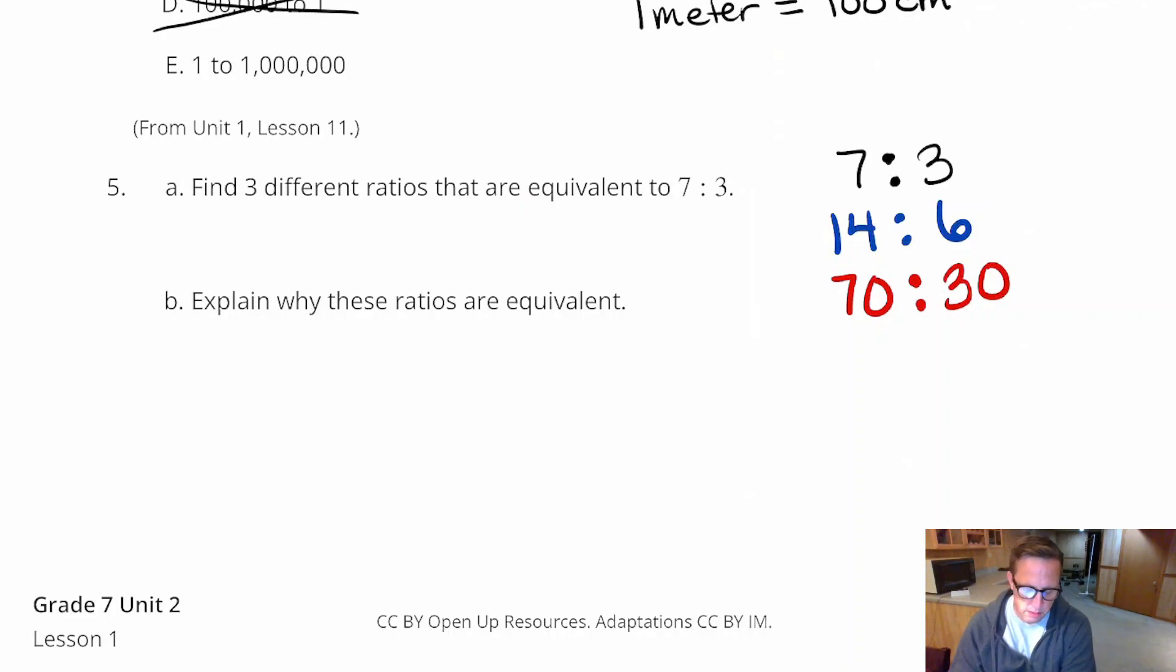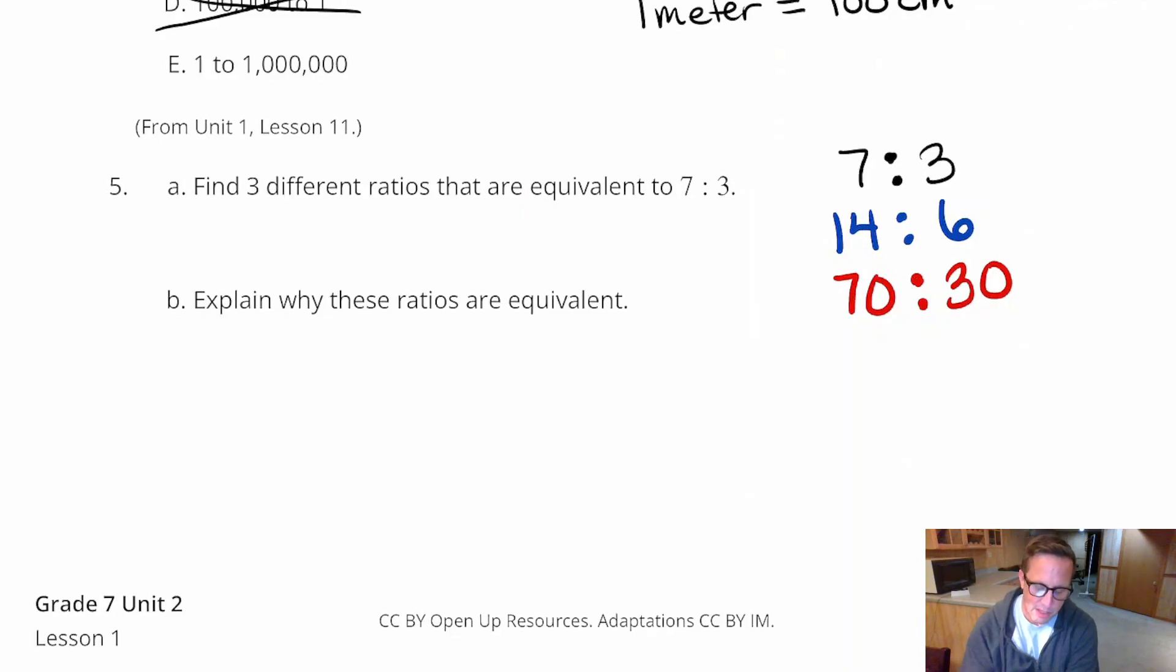And let's say I went the other way. Let's say I divided by two. Divided by two. So, half of seven, half of seven is three and a half. So, three point five. And then half of three is one point five. That's kind of ugly looking, but still works. They're all equivalent ratios. Even though we've got some decimals mixed in there.